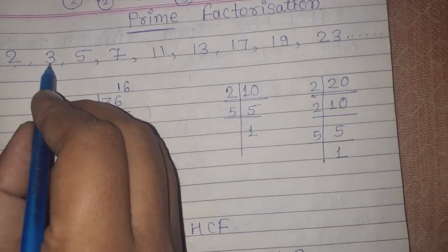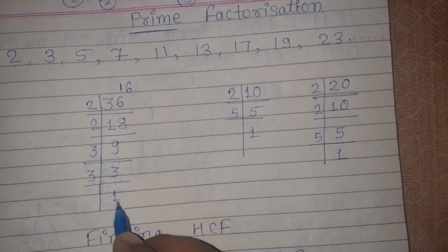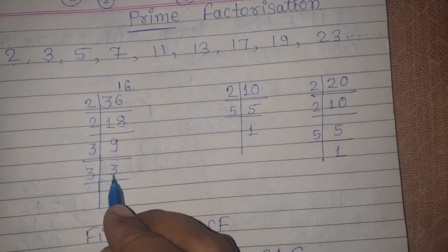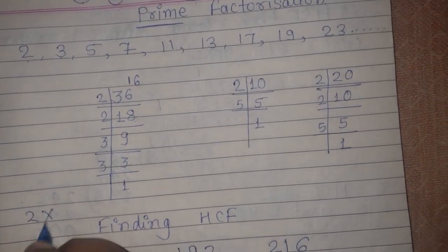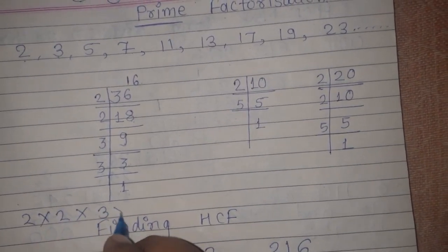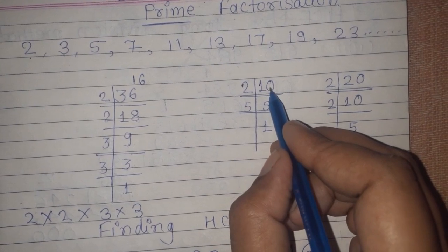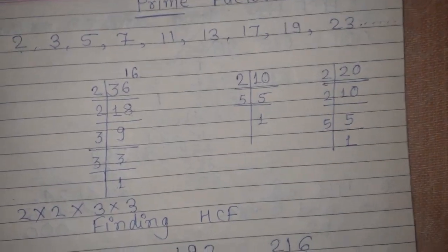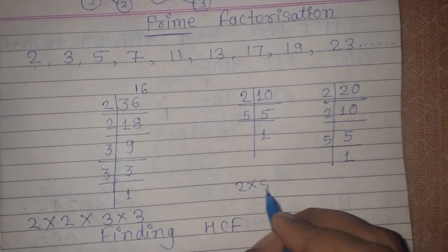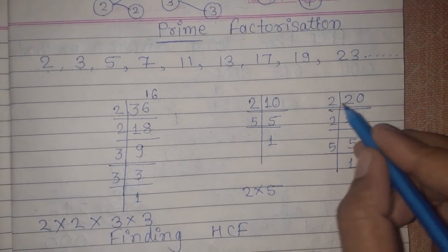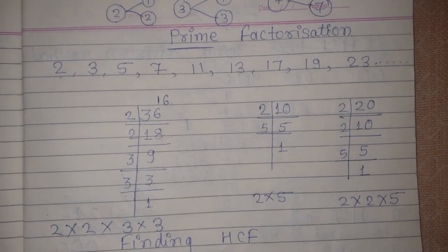The next prime number is 3, so we will divide by 3: 3 × 3 = 9, and 3 × 1 = 3. So 36 is divisible by 2, 2, 3, 3. If you have to show the factorization of 10, we take 10 — it is divisible by 2 and 5, giving us 2 × 5.